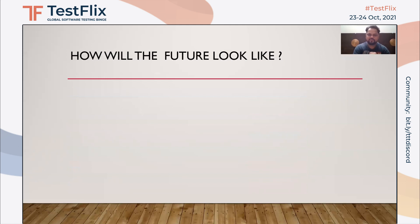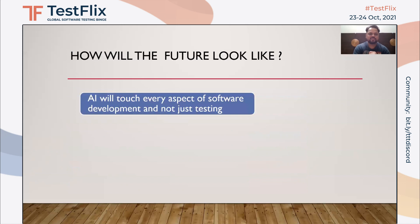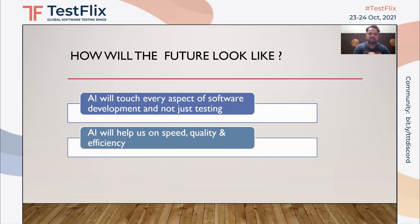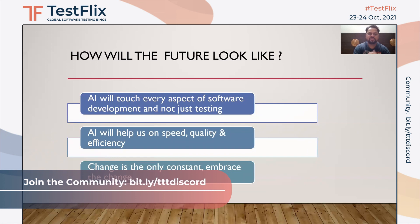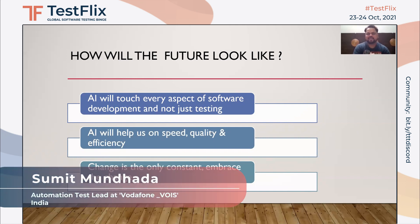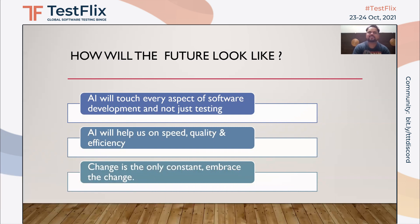How will the future look with artificial intelligence in place? AI will touch every aspect of software development, not just software testing — it is everywhere around us and our products. Artificial intelligence will help us with speed, quality, and efficiency, freeing us to focus on our interests, creative thinking, and delivering value. It is here to give us that time and be a helping hand, and since it is a good change, let's embrace it, learn from it, and try to achieve better quality assurance.